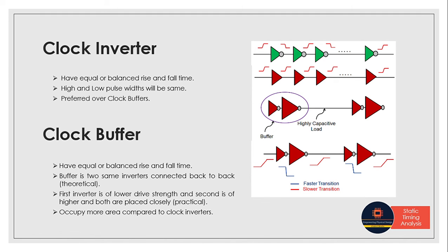That's why we prefer clock inverters over clock buffers—to save area and maintain equal rise and fall time. With equal rise and fall time, we won't see pulse width violation, and we'll get 50% duty cycle. Otherwise, delay will cause issues, duty cycle will fail, and it won't be 50%. That's why we use clock inverters for clock tree synthesis and other optimization cases.